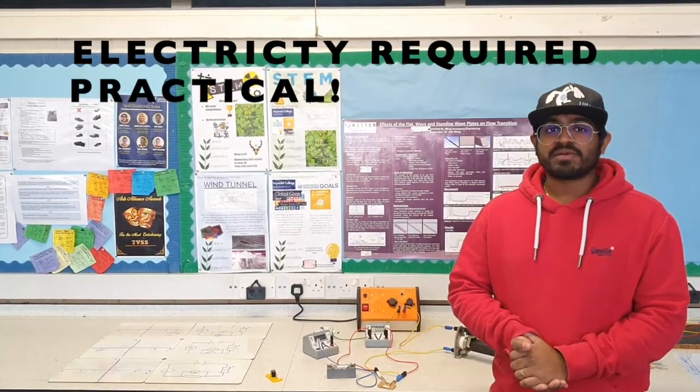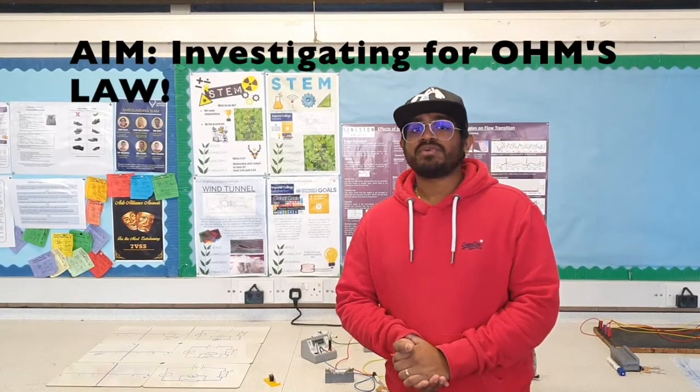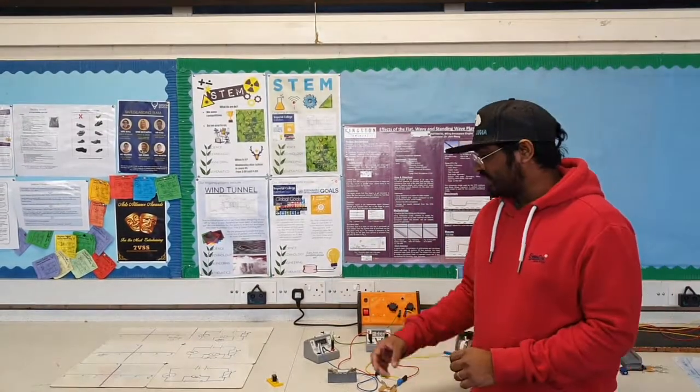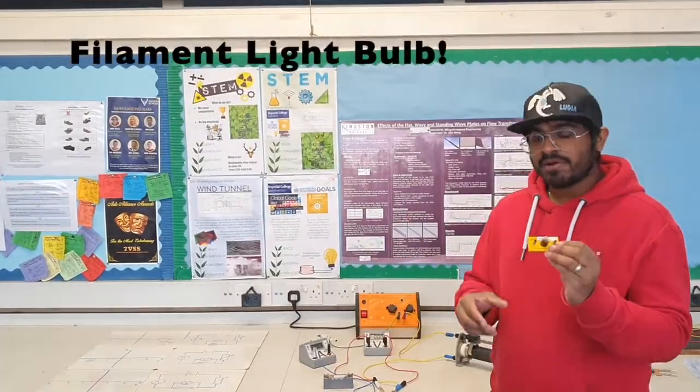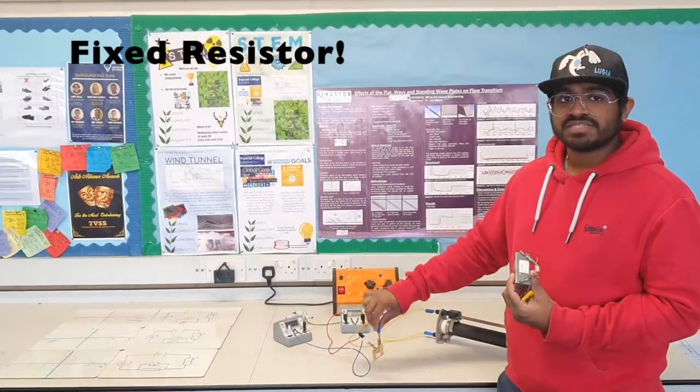The aim of this experiment is to investigate three different components to see whether they follow Ohm's law. The three components we'll be experimenting on are the filament light bulb, the diode, and here we've got set up already the fixed resistor.